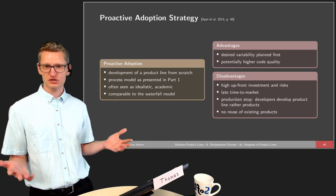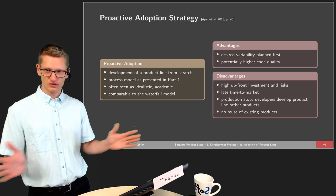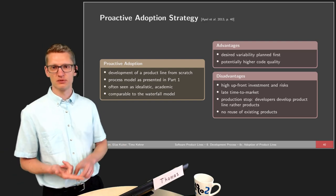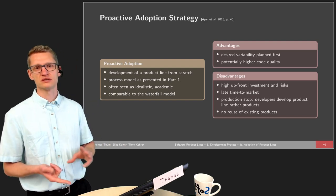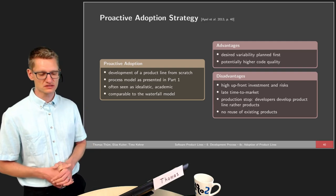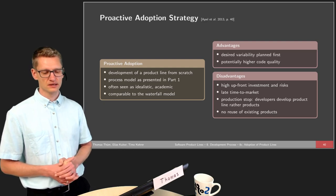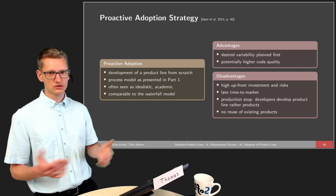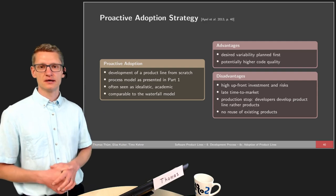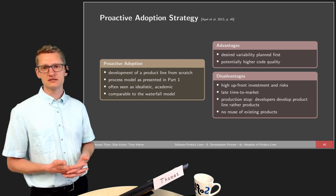The proactive strategy works in the fashion presented in the first part of the lecture: we perform the full domain engineering — domain analysis, domain design, domain implementation, and domain testing — before we configure the first product for the first customer. This requires a huge upfront investment; for a real project this could mean spending one or two years in domain engineering before deriving the first product. That's why this approach is often seen as idealistic or academic.